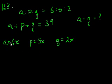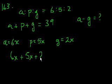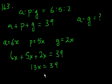Let's use this information to substitute back and see what x equals. So we get 6x plus 5x plus 2x equals 39. That's 6 plus 5 is 11 plus 2 is 13. So 13x equals 39, which means x equals 3.